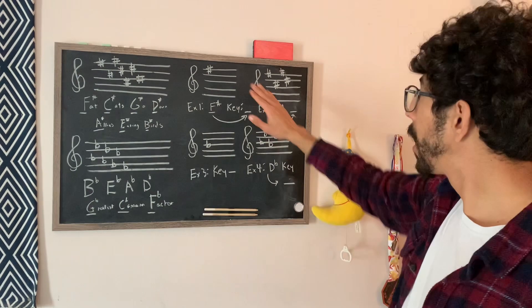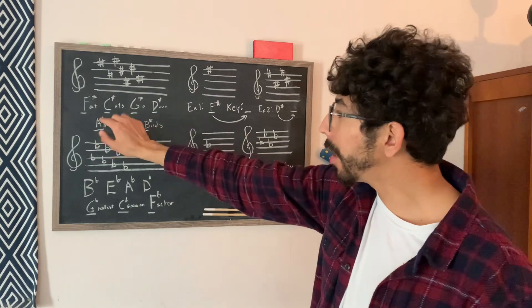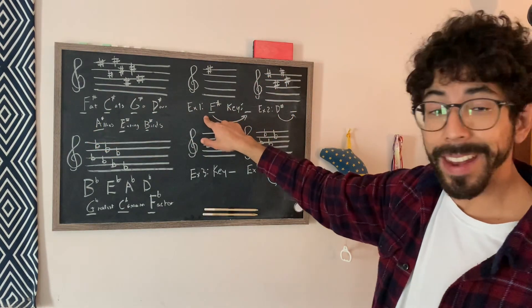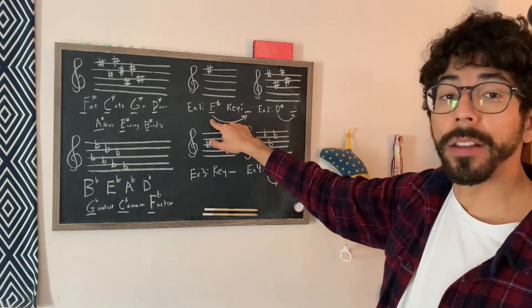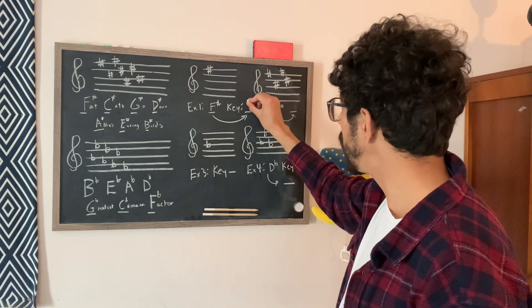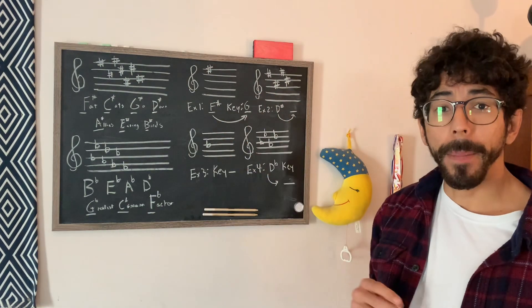The first one, we're just doing one sharp in the key signature, which means, according to this, one sharp is going to be F-sharp. And so the next letter after F is going to be G. So this would be in the key of G major, right? Okay.